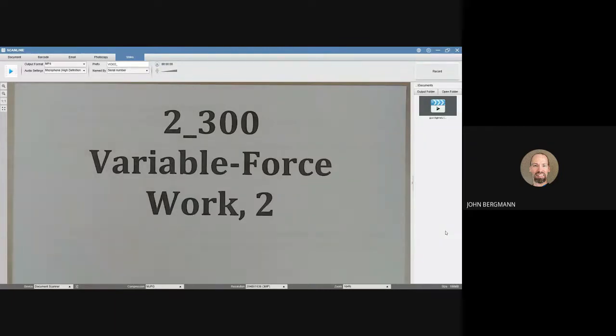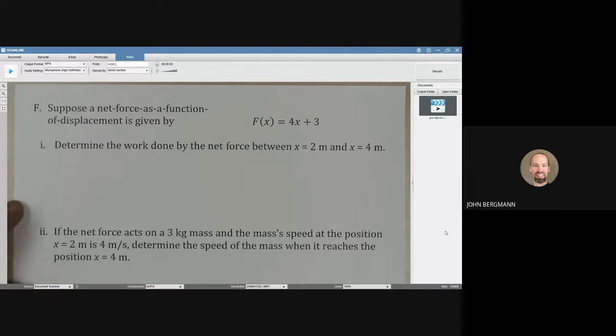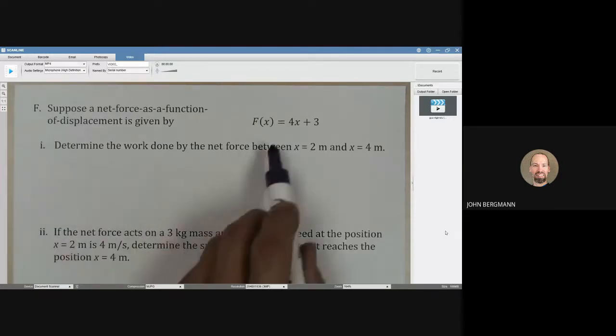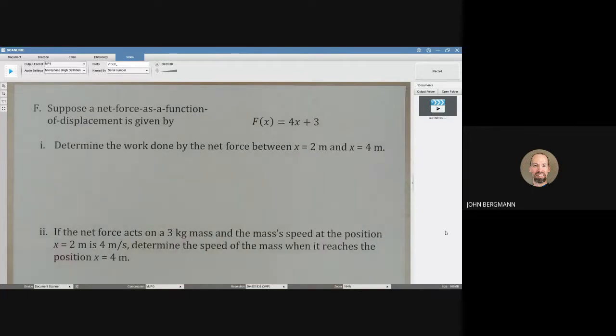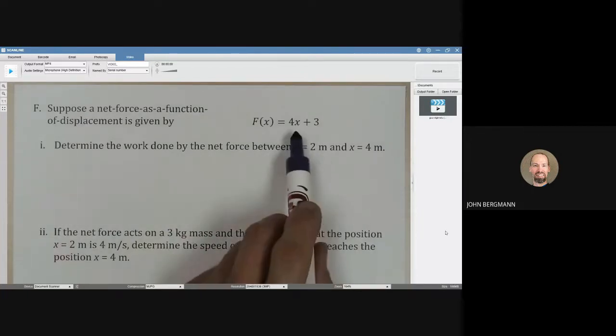Let's do another example of finding work when the force is varying. Suppose a net force as a function of displacement is given by this equation here. One more time, what's happening here is the force is not constant.